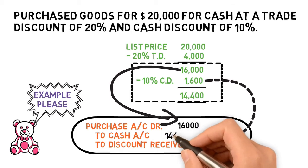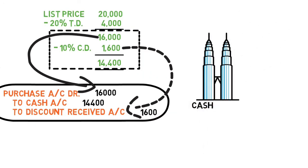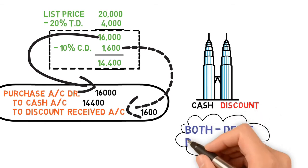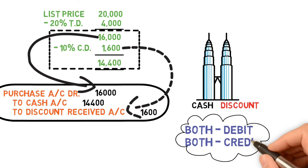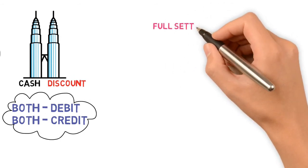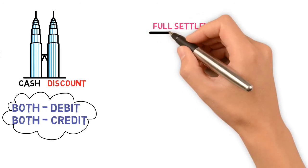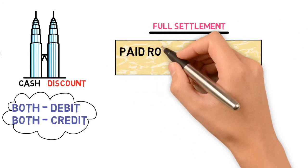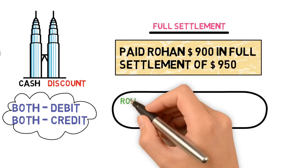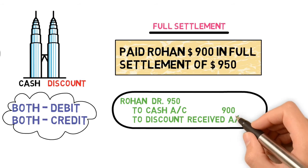Cash and discount are like twin towers — inseparable. In journal entries, both cash and discount will always be written on the debit side together, or both on the credit side. Another important fact: whenever the phrase 'full settlement' appears, it always means there is some element of discount. For example, paying Rohan 900 dollars in full settlement of 950 means the difference of 50 is treated as discount, and nothing more is owed.